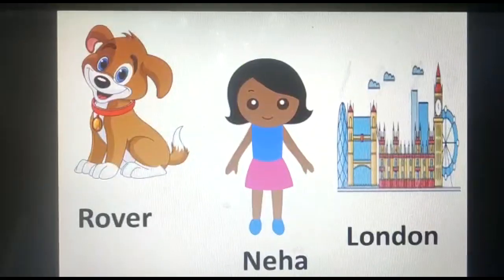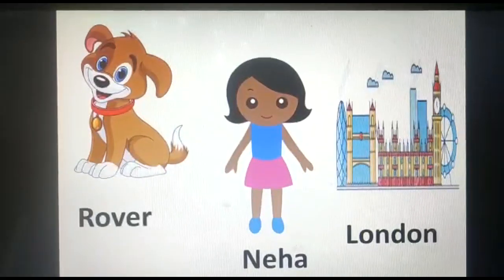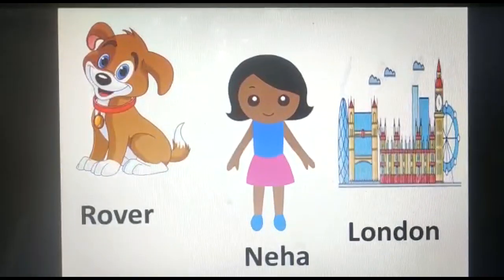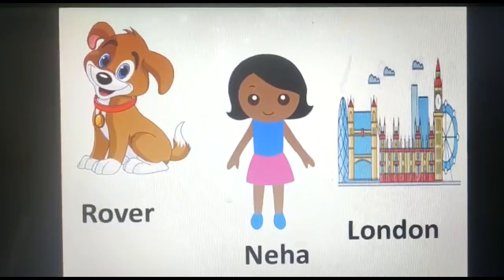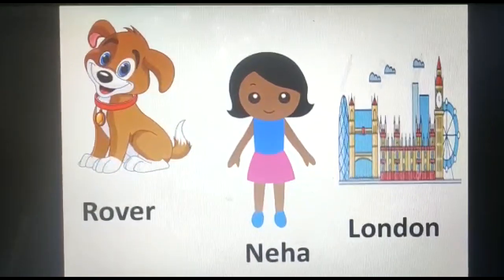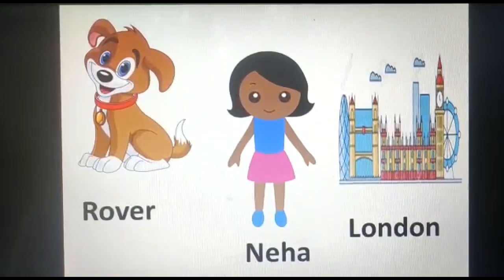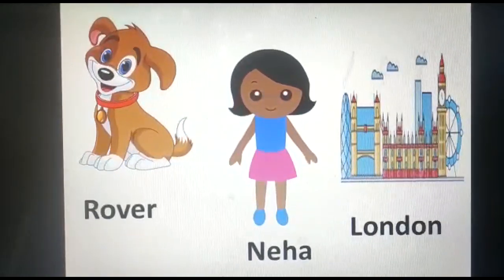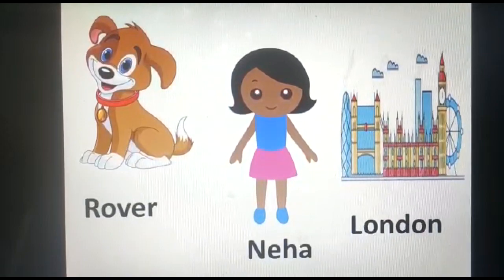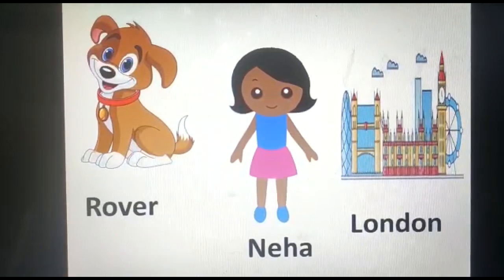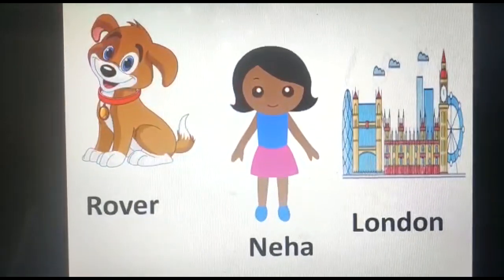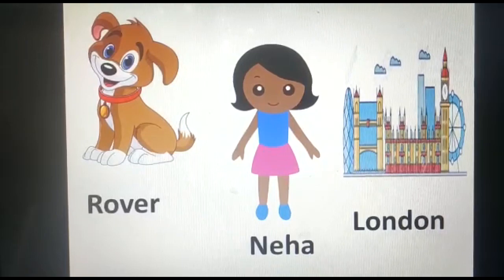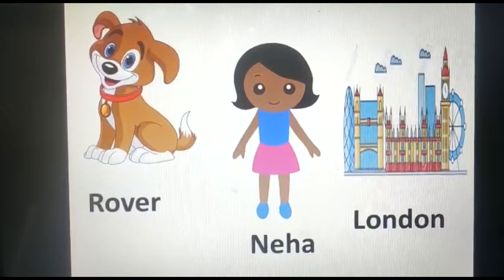Now look at the following examples. Rover — this is the specific name given to a dog. Neha — a particular name given to a person. London — the specific name given to a city.